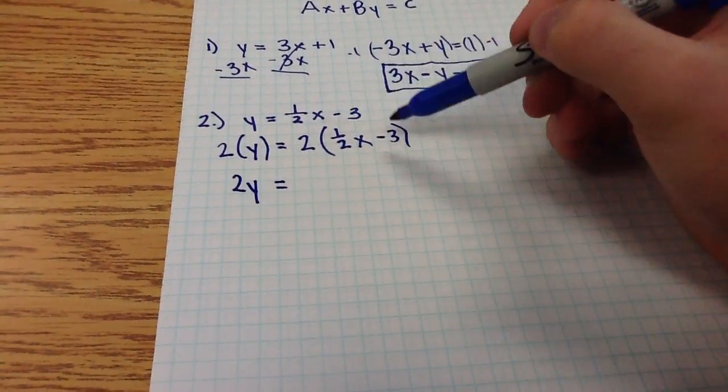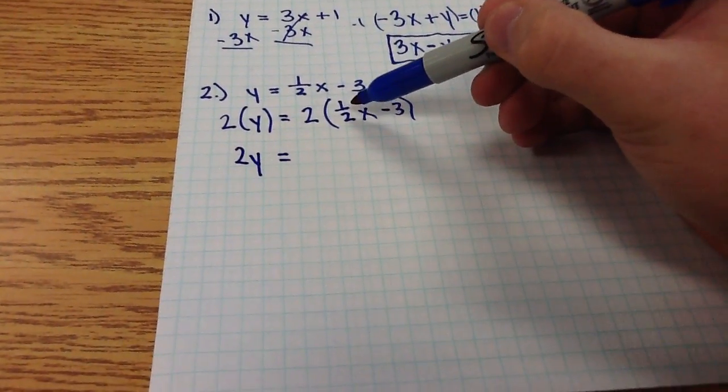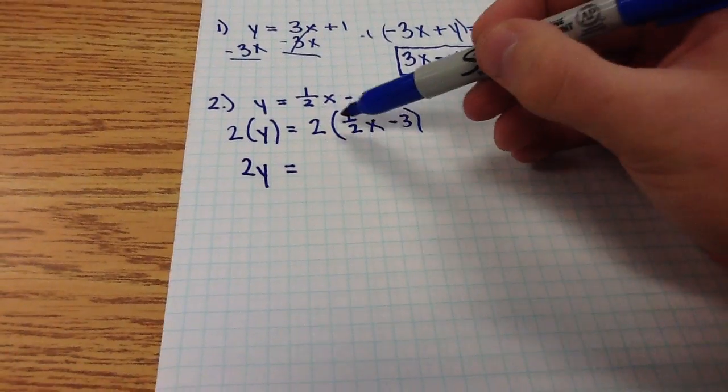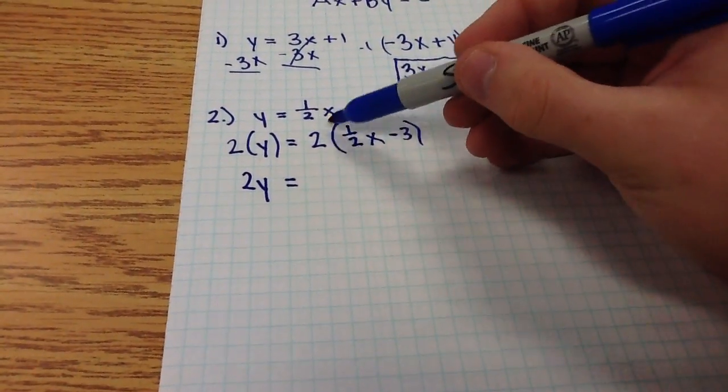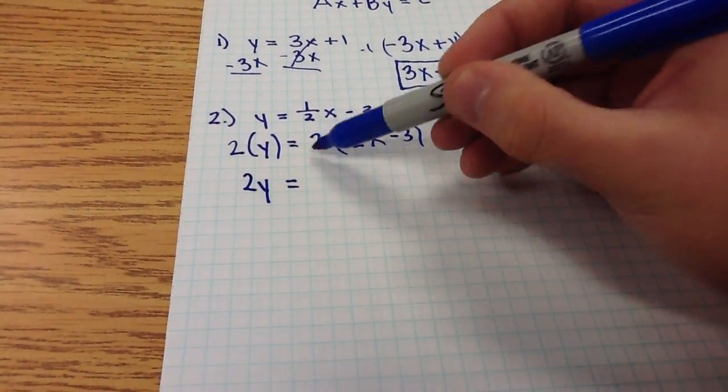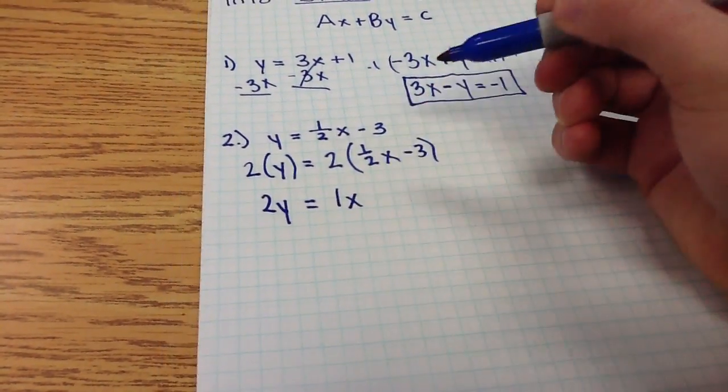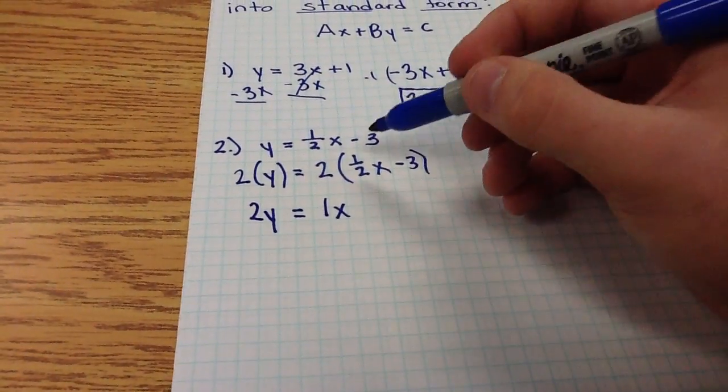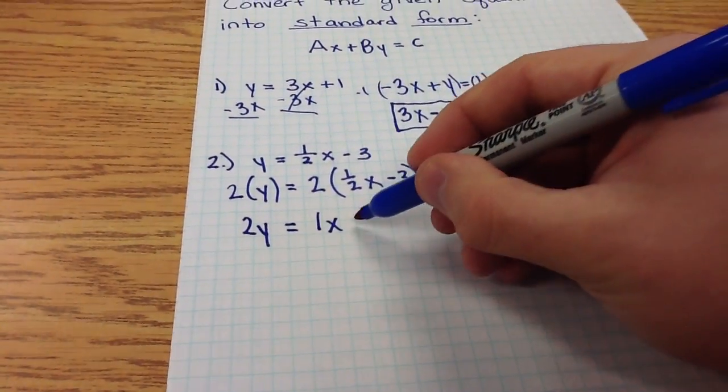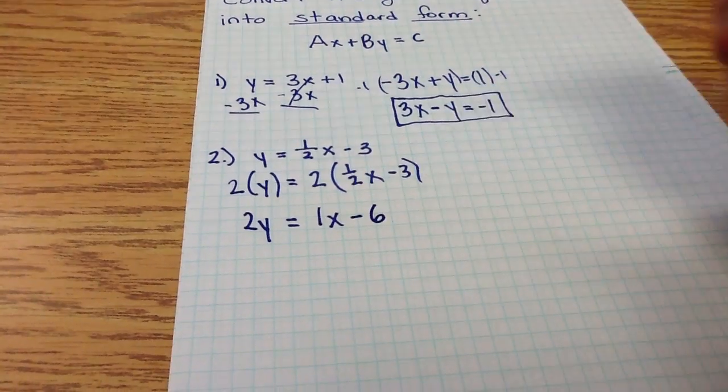And now we remember to use the distributive property. 2 times one-half—now we know that 2 times one-half does give us 1 whole, but more specifically, the 2 and the 2 here cancel, so I'm left with just whatever the numerator is. So it is 1x. 2 times one-half does give us 1, and then 2 times negative 3 does give us negative 6.